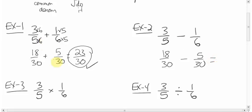Again, the reason for that is the exact same question, just the minus sign there. Subtract the tops. 18 minus 5 is 13. 30 stays the same. 13 over 30 is the final answer because you can't reduce it.